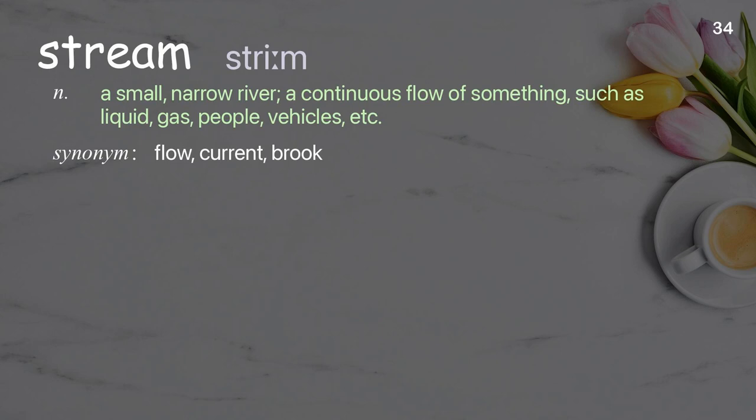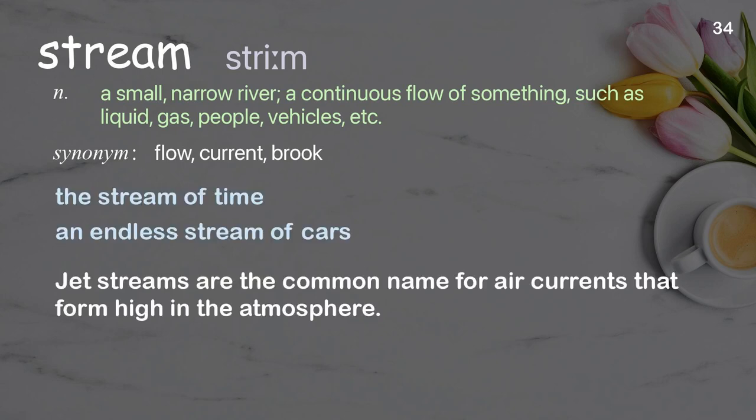Stream: A small, narrow river; a continuous flow of something, such as liquid, gas, people, vehicles, etc. Examples: The stream of time. An endless stream of cars. Jet streams are the common name for air currents that form high in the atmosphere.